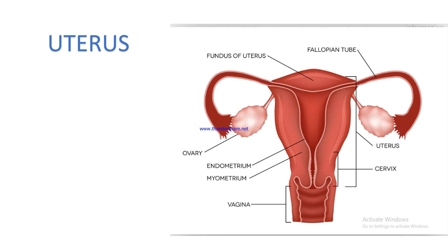As seen in this picture, the fundus of the uterus is at the top, with fallopian tubes on either side, each in contact with an ovary. The uterus itself has three layers: the innermost endometrium, the myometrium, and the outermost perimetrium. Below the uterus is the cervix, and then the muscular tube called the vagina.